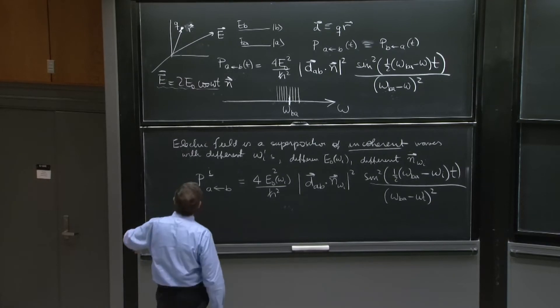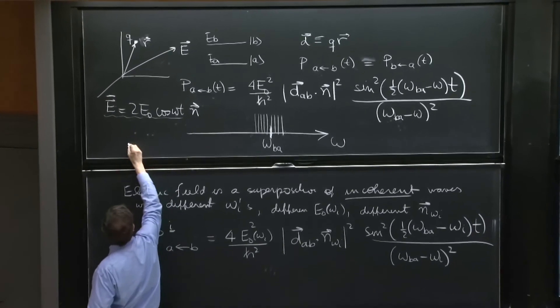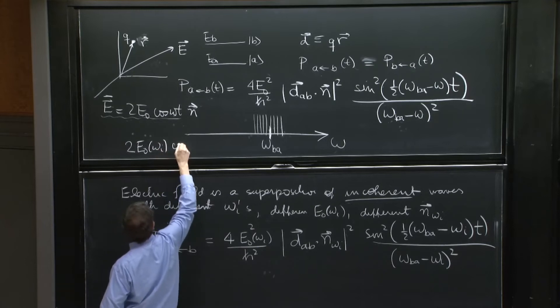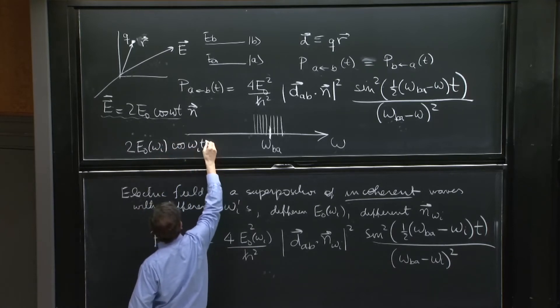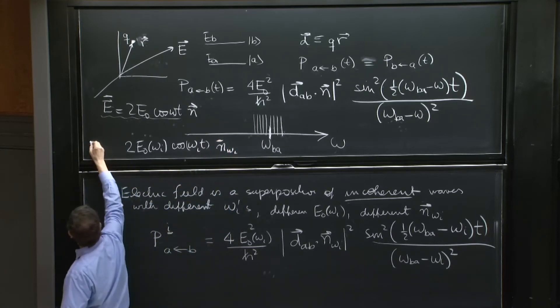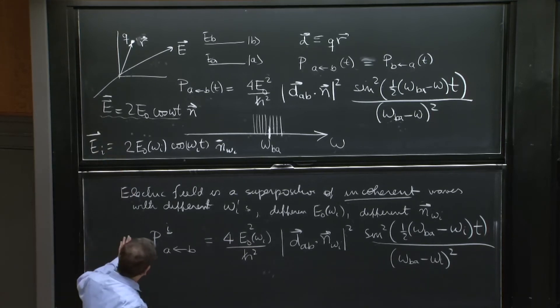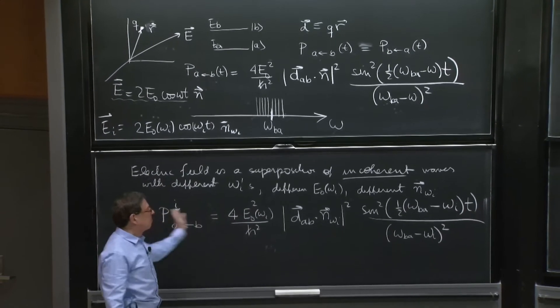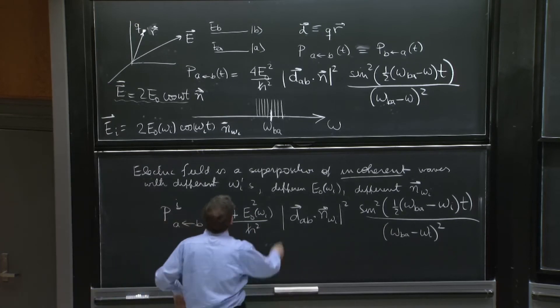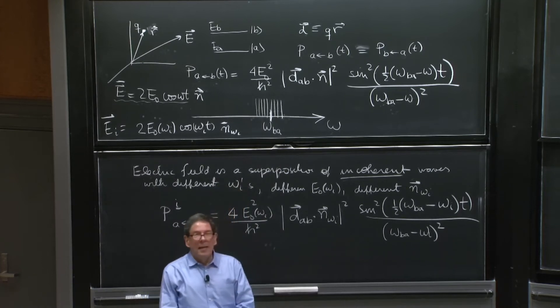That's what it does. So you could say, the i-th mode is one in which I would write 2 E_0 of i. So here would be 2 E_0 of omega_i cosine of omega_i t times the vector n omega_i. That's the i-th mode of the electric field. And that i-th mode of the electric field does this transition. And we have to sum over all these modes that are nearby here.